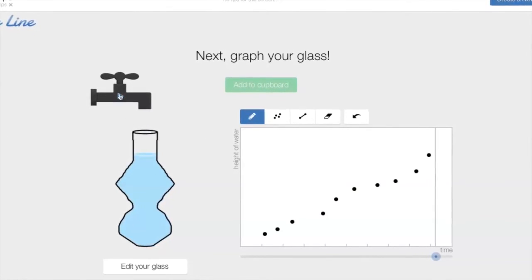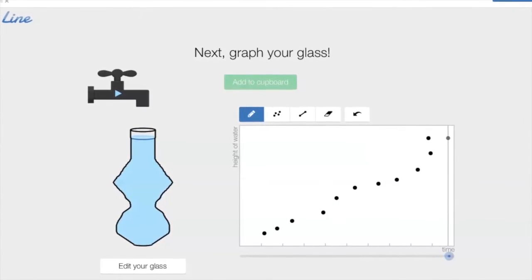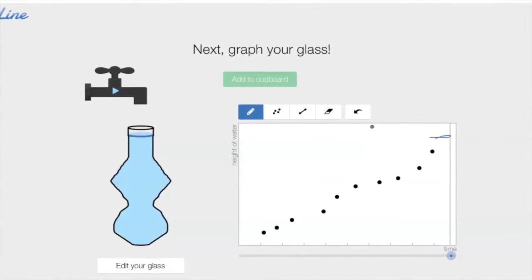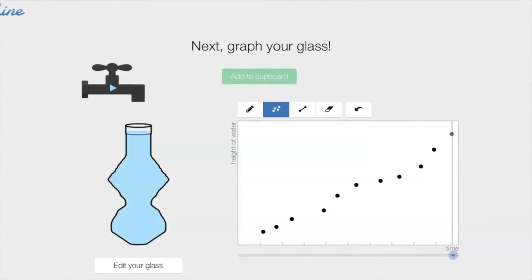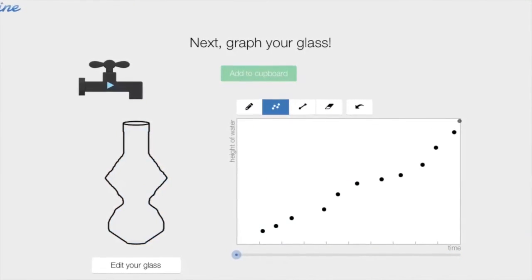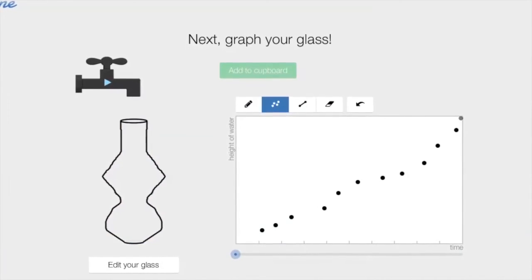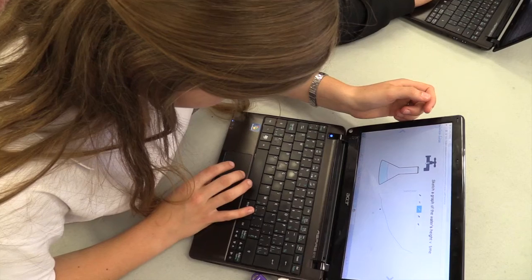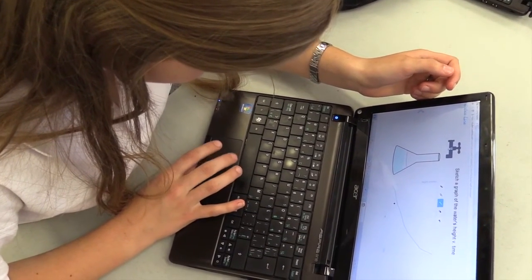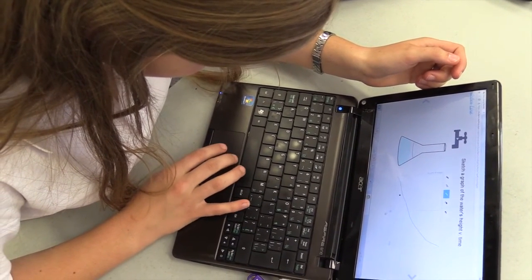I would have liked to have one final beaker where they could see the shape of the beaker and had to figure out the shape of the graph without the ability to watch the animation during the process. Another extension that would show a student's full understanding would be to present the graph first and have the students design the corresponding beaker shape.